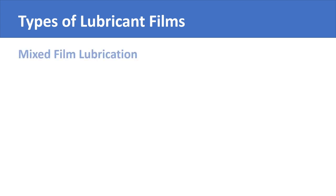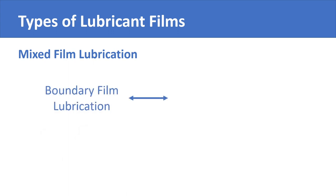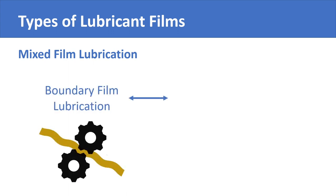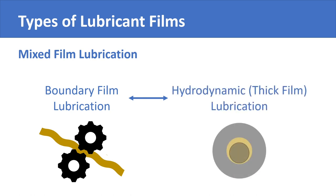Finally, mixed film lubrication is a cross between boundary film lubrication and hydrodynamic thick film lubrication. While the bulk of the surfaces are separated by a lubricating layer, some part of the surfaces do make contact with each other, as in boundary lubrication.